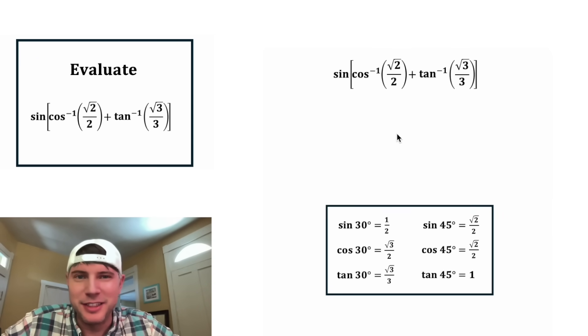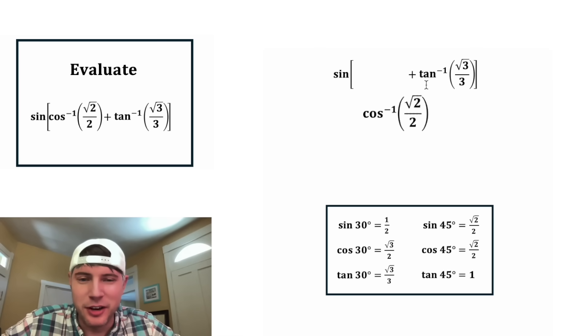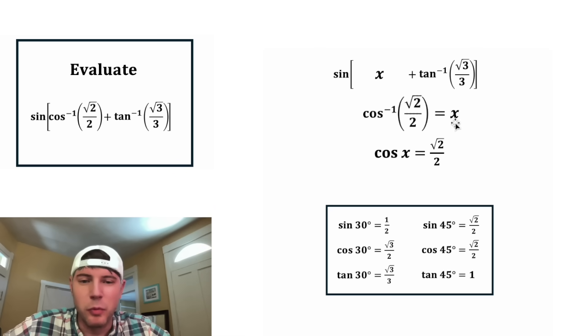Now we can evaluate this thing. First, let's focus on the cosine inverse of square root of two over two. We can set this equal to x. Another way you can think of this is cosine of what gives us root two over two. And if we look down here, it's cosine 45 degrees that gives us root two over two. So x is equal to 45 degrees. And we can update this x up here.